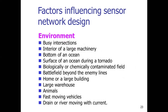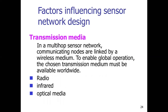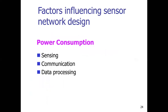Environment is another influencing factor — where you want to deploy the network, whether inside a home, under the bottom of the ocean, or inside a fast-moving vehicle. Transmission media is also a factor: to transfer or receive data sensed by your sensor, you may use radio as a transceiver medium, infrared, or optical media.